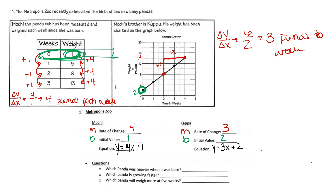Now we compare the information. Question one: which panda was heavier when it was born? That's the initial value. Mochi was one pound; Kappa was two pounds, so Kappa was larger. Question two: which panda is growing faster? That's the rate of change. Mochi is gaining four pounds each week; Kappa is growing by three pounds each week, so Mochi is gaining more.